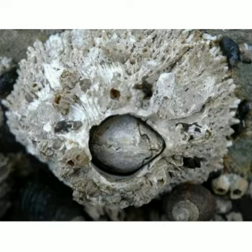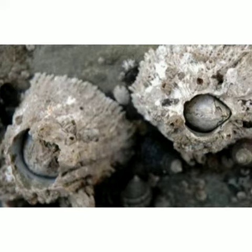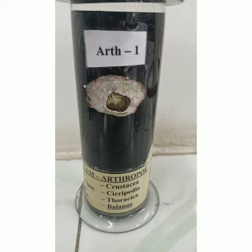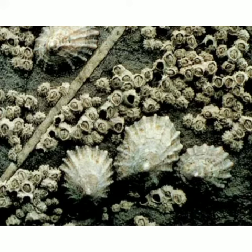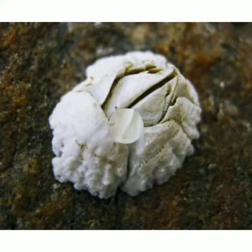Let's start with the very first specimen, that is Balanus balanus. Its common name is common barnacle or common rock barnacle. The scientific name is Balanus balanus and it belongs to phylum Arthropoda. The body of this organism is totally enclosed by a stony gray-white shell. The size of this shell ranges from 5 mm to 10 cm. The shell is white to gray in color, and the operculum is white and diamond-shaped.